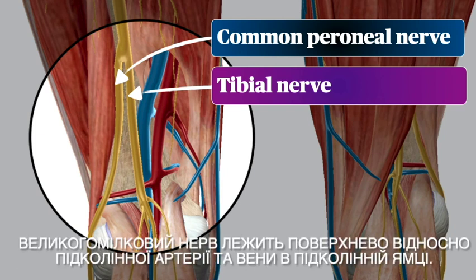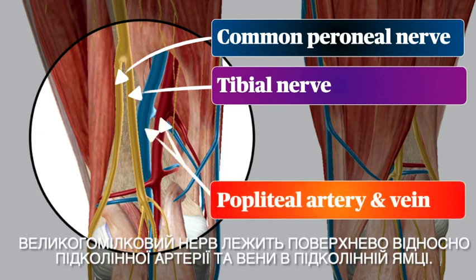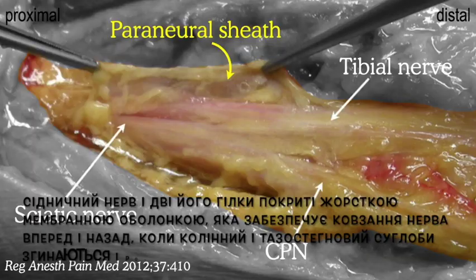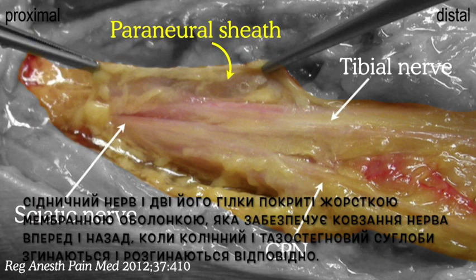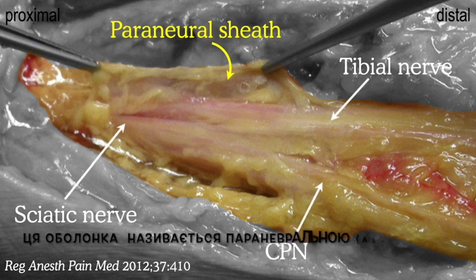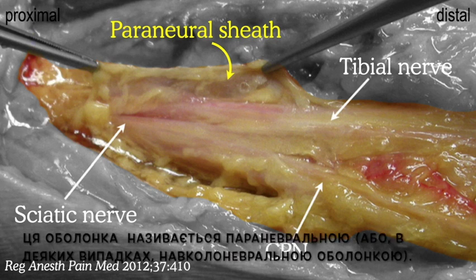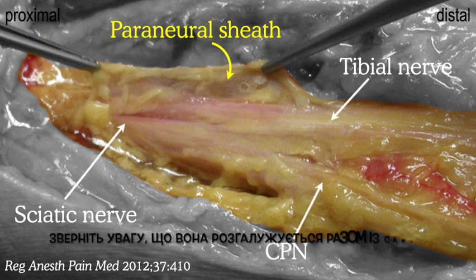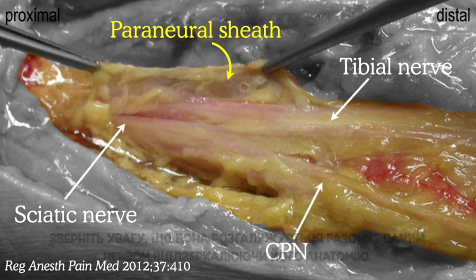The tibial nerve lies just superficial to the popliteal artery and vein in the fossa. The sciatic nerve and its two branches are covered by a tough membranous sheath that provides a mechanism for the nerve to glide back and forth as the knee and hip joints flex and extend. This has been called the perineural sheath, or in some circles the circumneural sheath — note that it branches along with the nerve itself to mirror the anatomy.